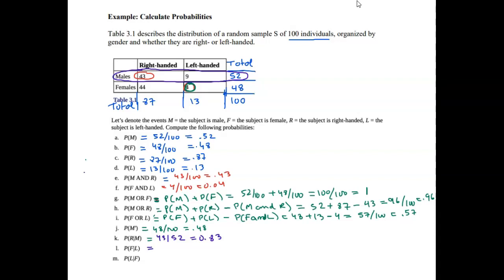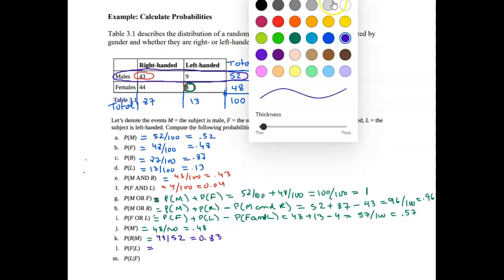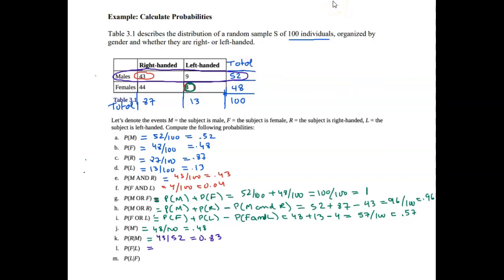Next, the probability of getting a female given we're only looking at the left-handed group. Our sample space is now just the 13 left-handed people, and 4 of them are female. So the probability is 4 out of 13.